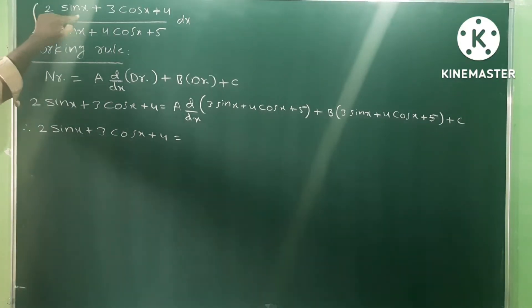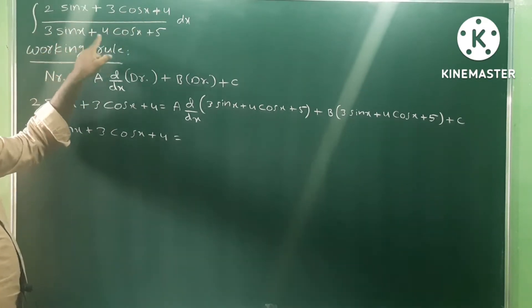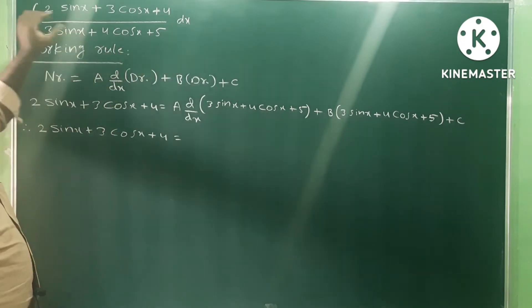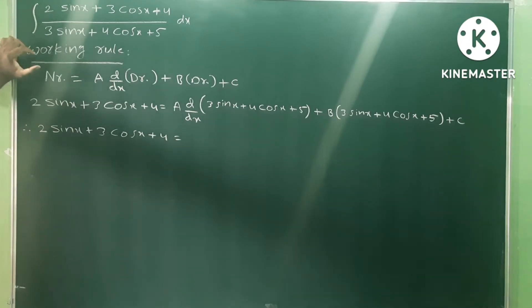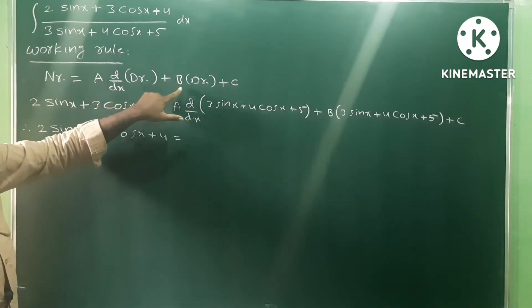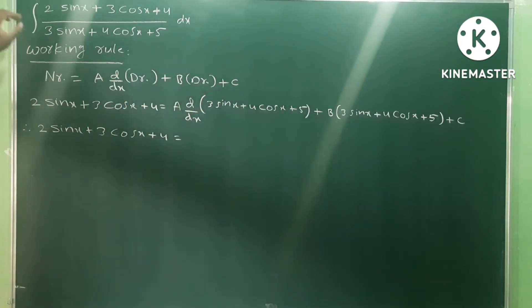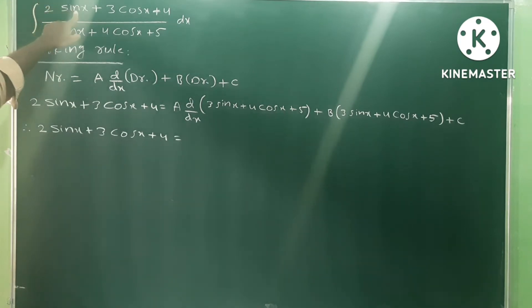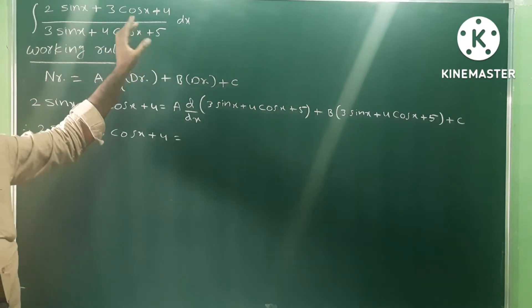The problem is: integral of (2sinx + 3cosx + 4) / (3sinx + 4cosx + 5) dx. This is a type of integration method problem. The general model is: integral of (a·sinx + b·cosx + c) / (d·sinx + e·cosx + f) dx. This is the working rule model.